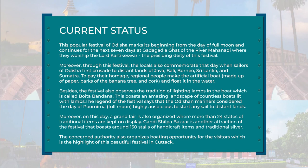The legend of the festival says that Orissan mariners consider the day of Purnima, the full moon, highly auspicious to start any sail to distant lands. On this day, a grand fair is also organised where more than 24 states of traditional items are kept on display. Gandhi Shilp Bazaar is another attraction of the festival, with around 150 stalls given to people to display their handicrafts, traditional silver work, and other items. Locals and people from other regions of India as well as Indonesia can come and buy these items at the bazaar. The concerned authority also organises boating opportunities for visitors, which is the highlight of this festival.